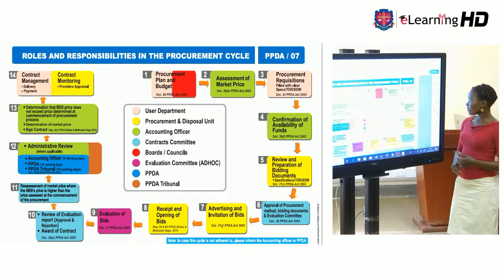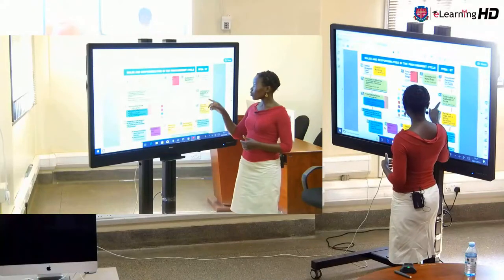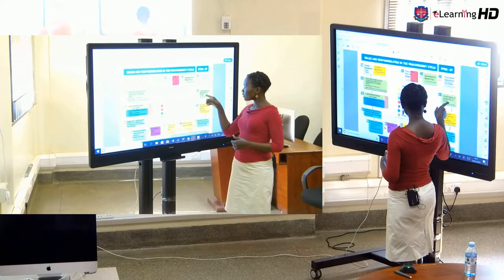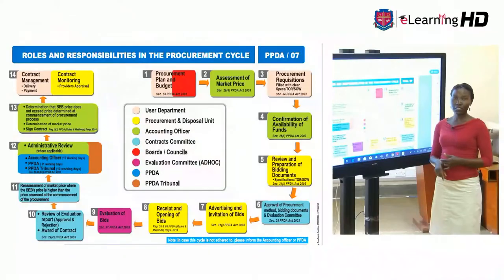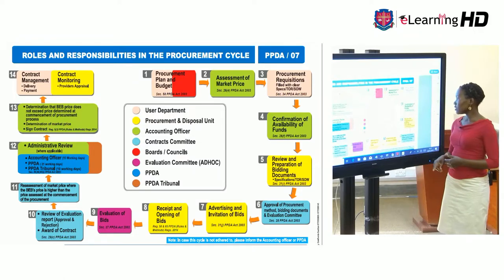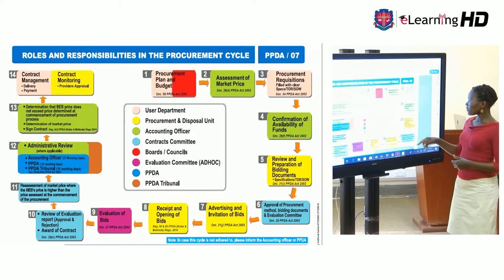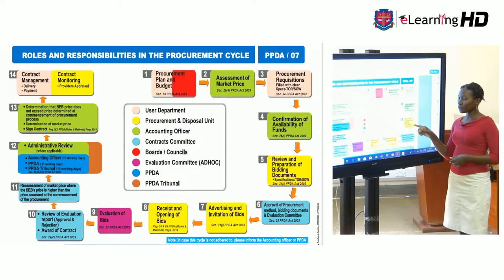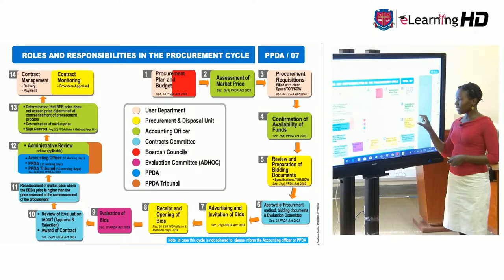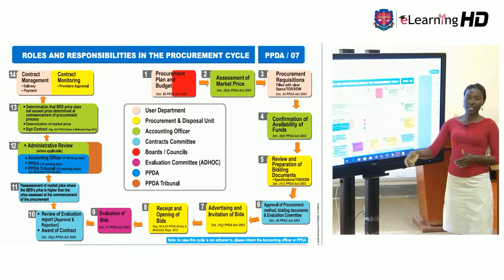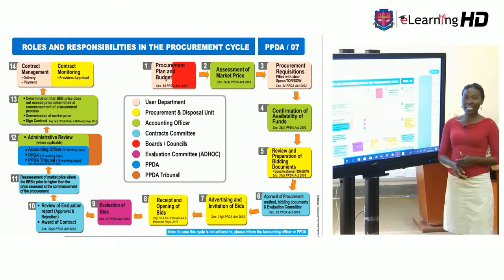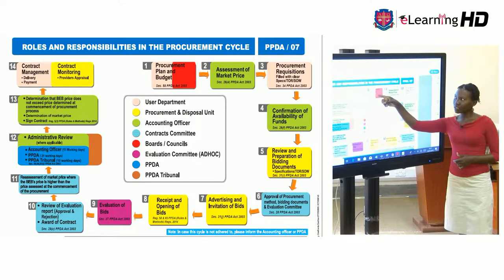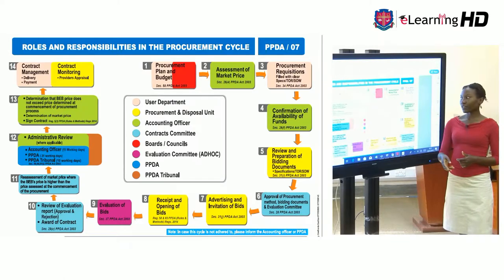Then three, we need to look at procurement requisitions. Procurement requisitions are an authorization of user departments when they need items. Then four, we need to confirm availability of funds. The availability of funds is a result of procurement planning and budgeting — the money has to be there for them to carry out the procurement. Five, we look at review and preparation of bidding documents. Bidding is looking out for suppliers from the marketplace — what do suppliers have to offer and how can they meet the end users' needs?